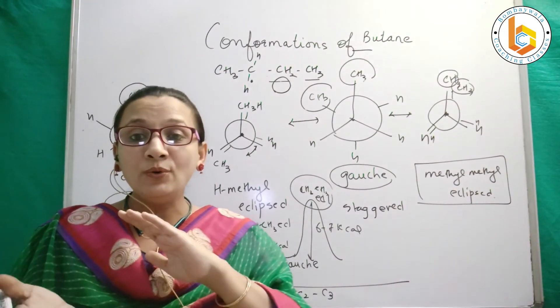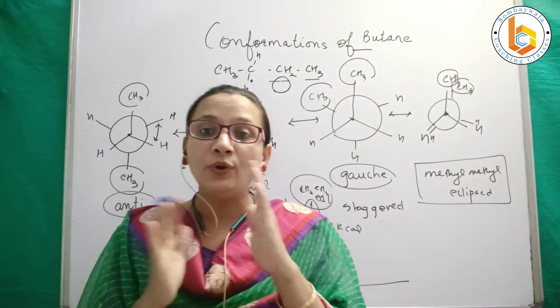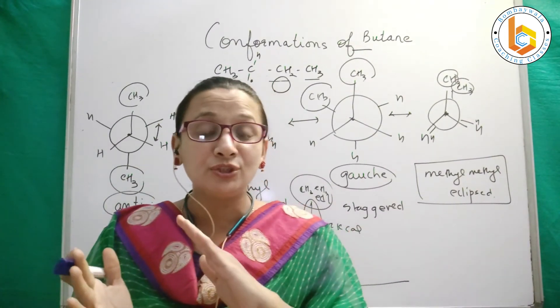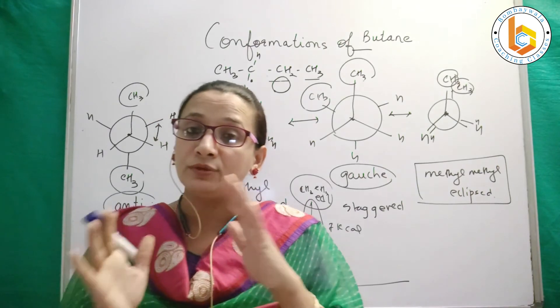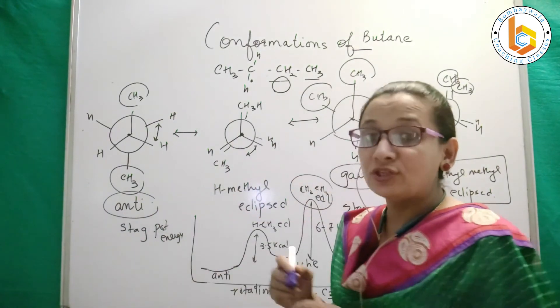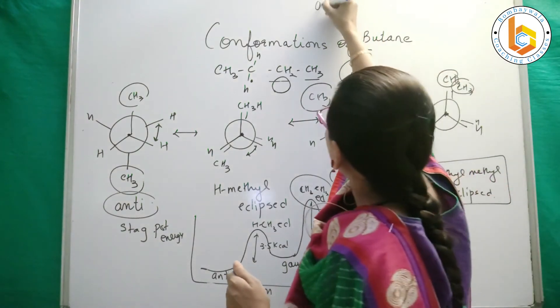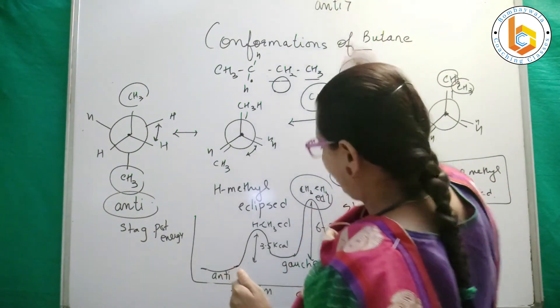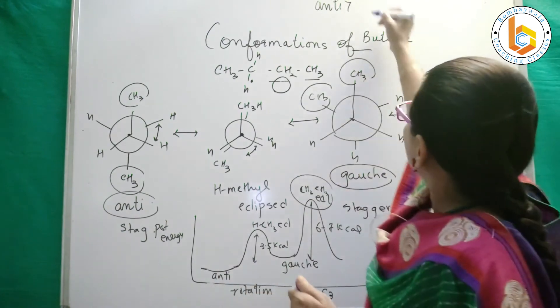This is how butanes undergo conformations and what is the relationship of energy with respect to the rotational isomers. The most stable is anti, so the sequence goes as anti is the most stable.